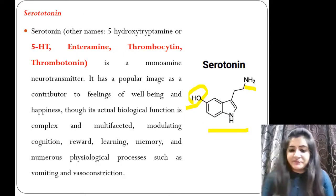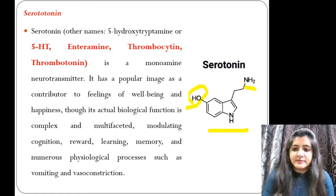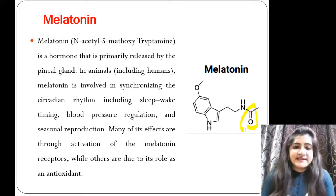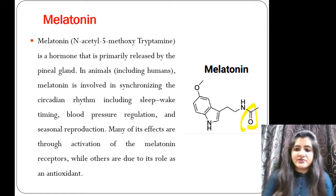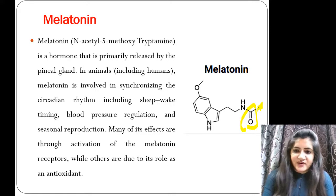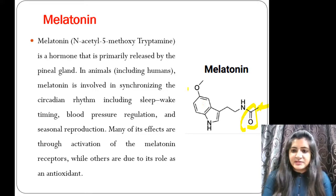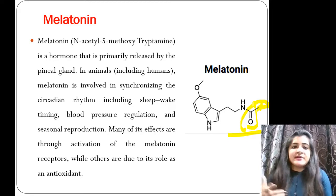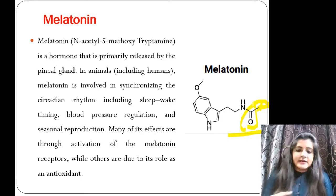Now see the structure of melatonin. The difference between serotonin and melatonin is the presence of a ketone (CO) group in melatonin. Chemically, melatonin is N-acetyl-5-hydroxytryptamine — a COCH3 group is present. It is a hormone primarily released by the pineal gland, and in animals it is involved in the circadian rhythm and sleep-wake timing.